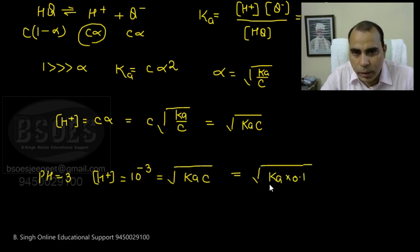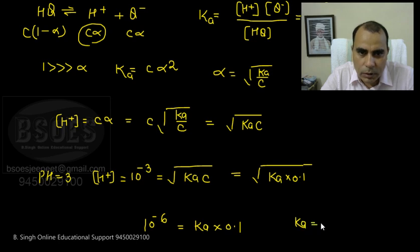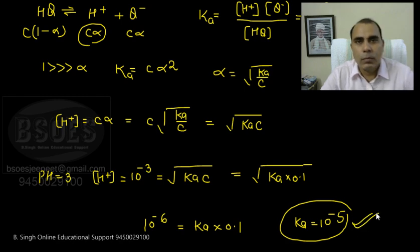If we square both sides, this becomes 10 to the power minus 6. So 10 to the power minus 6 equals Ka times 0.1. Therefore, Ka value is 10 to the power minus 5. This is our correct answer.